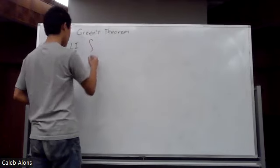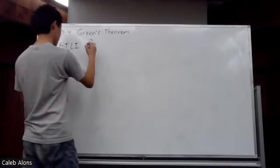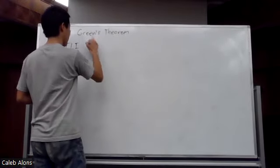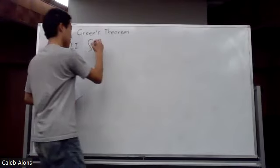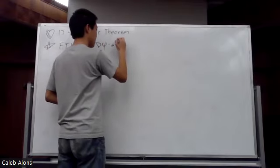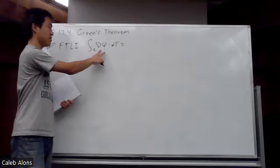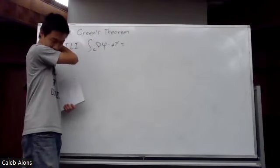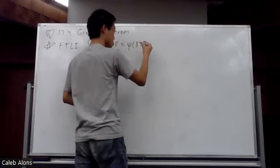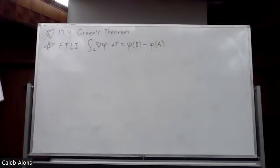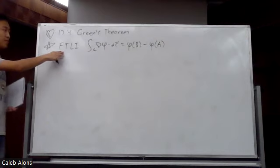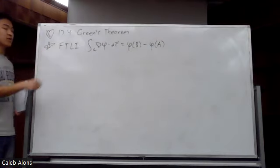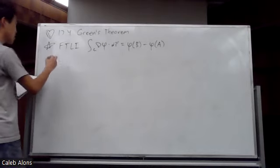The fundamental theorem of line integrals states that for an open curve C, if you have a conservative field — meaning it's the gradient of some potential function — then the integral of F dot dr works the same way as the regular fundamental theorem of calculus: you go backwards from differentiation. You evaluate the potential function at the endpoint minus the start point. This is the starting point, and from here it extends into double integrals and triple integrals — there's a version of this fundamental theorem in all of those.